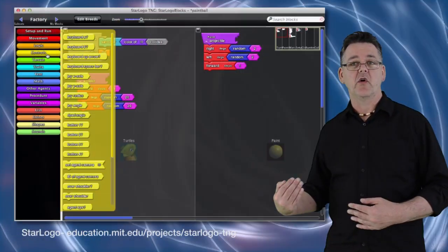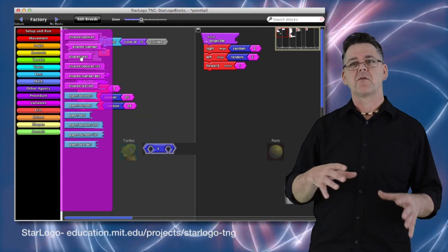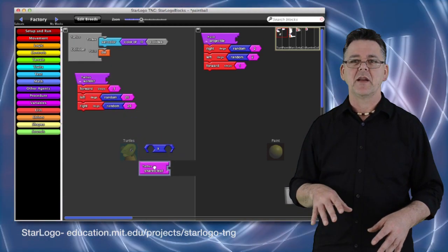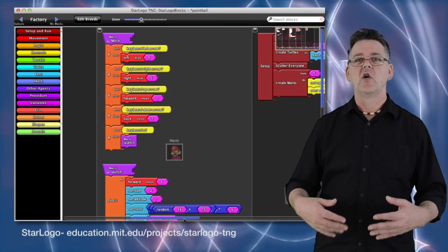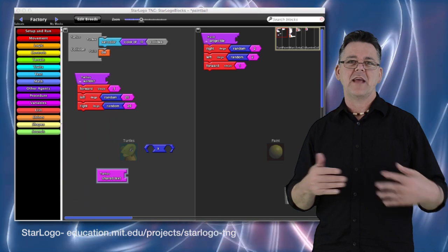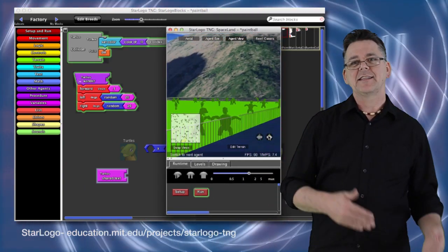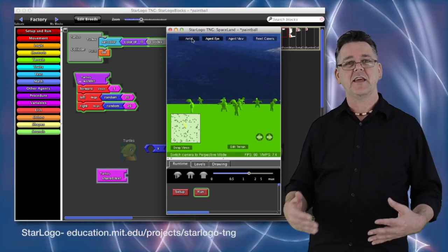Then there's StarLogo. StarLogo takes the concept of Turtles from the original Logo programming language developed by Seymour Papert, and it supercharges it with a whole lot of options for complex programming. And again, it uses this idea of snap-together blocks to develop flow and logic in the code. And it starts to integrate some quite complex mathematical thinking.